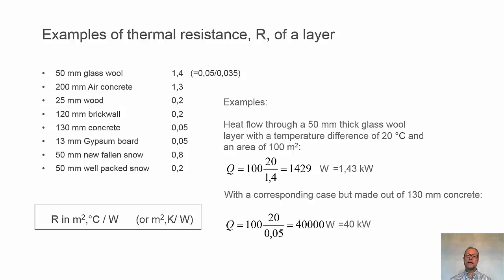Using the formula from the previous slide, Q equals 100 times 20, 100 is the area, 20 is the temperature difference, divided by the thermal resistance 1.4, and we get 1429 watts or 1.43 kilowatts.